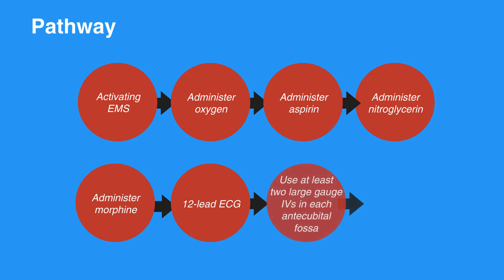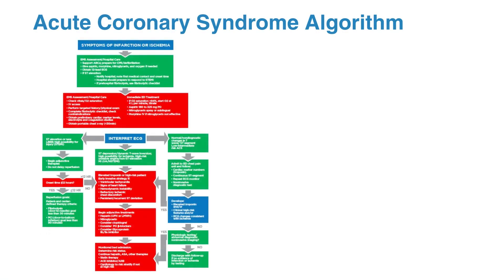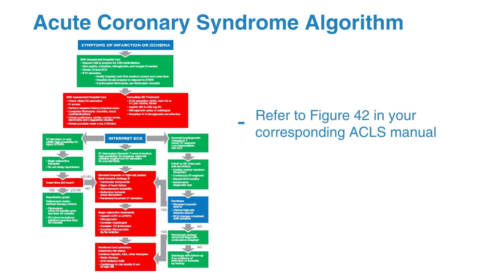Use at least 2 large-gauge IVs in each antecubital fossa. Notify the hospital. Take the individual to a PCI center if probable STEMI. Activate ACS protocol at the hospital. For the acute coronary syndrome algorithm, refer to Figure 42 in the corresponding ACLS manual.